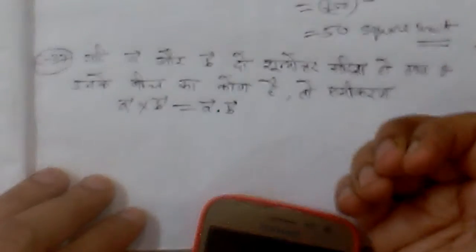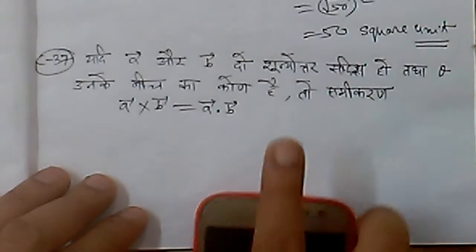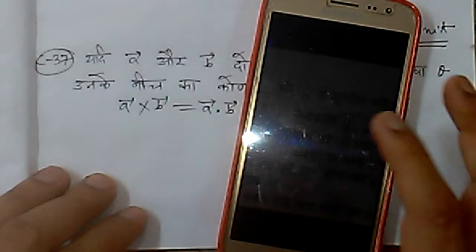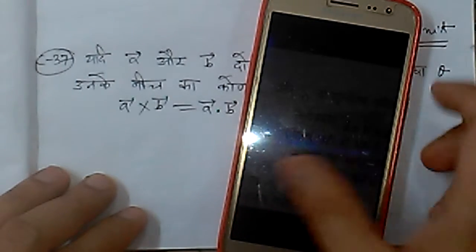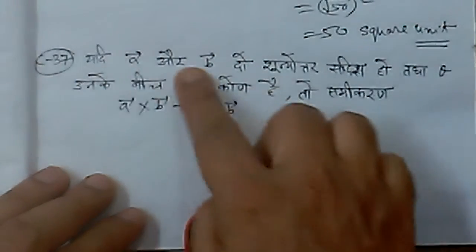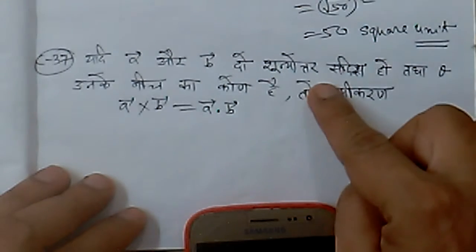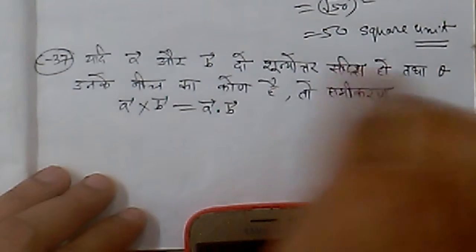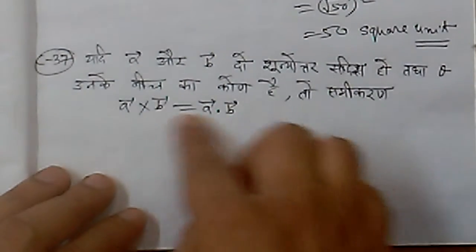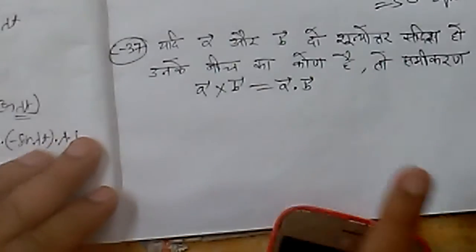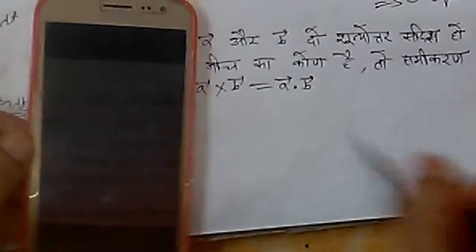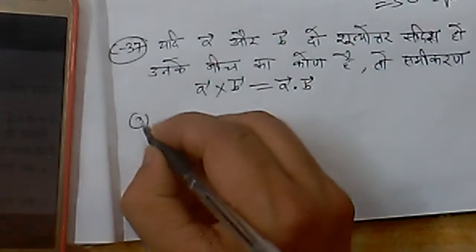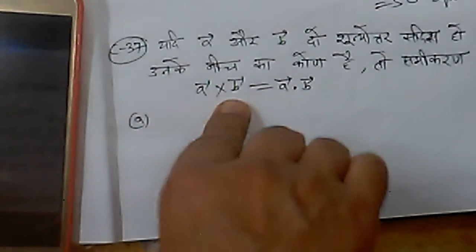When is this equation true and when is it false? We have to find out from four given options which is the correct answer. If A and B are two non-zero vectors and theta is the angle between them, then in which case can this be correct? Option A states: never — this equation can never be true.